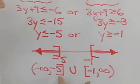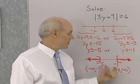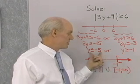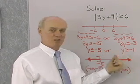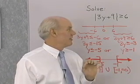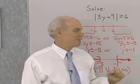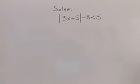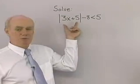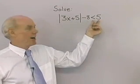That's the interval notation for the solution set. We can also express the solution using inequality notation. That's our first linear inequality involving absolute value. Now let's look at another problem: solve the absolute value of 3x plus 5 minus 8 less than 5.